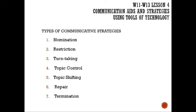Next is topic control, which consists of procedural formality or informality that affects how topics develop in conversation. Some people — even friends and loved ones — want to control the topic and remain the center of attention. After topic control is topic shifting, which involves moving from one topic to another. This is especially useful when the current topic is sensitive to the other party.